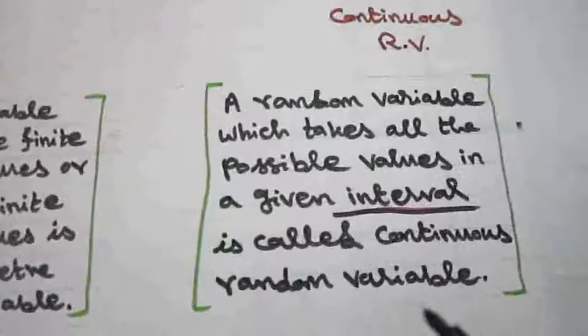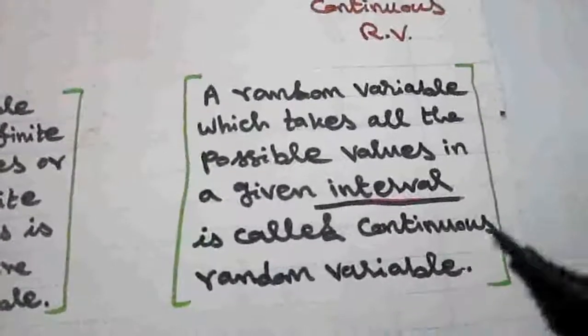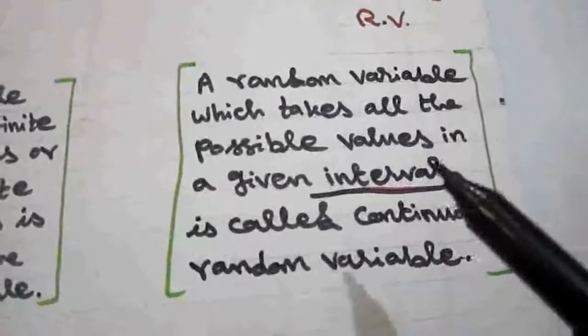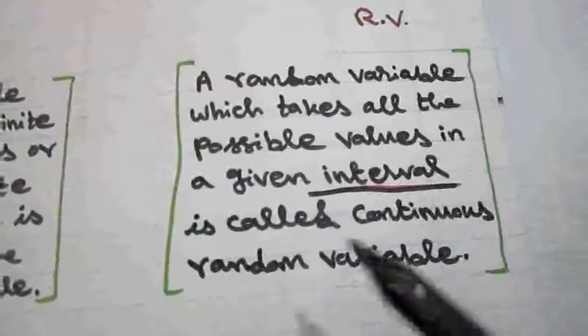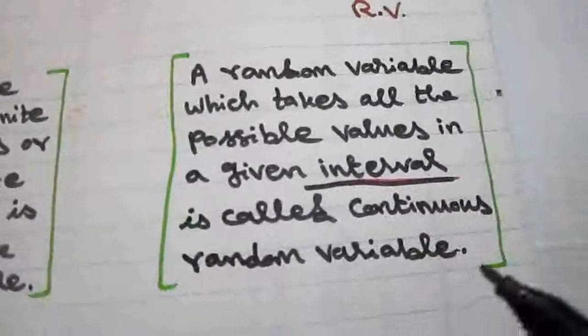Continuous random variable means a random variable which takes all the possible values in a given interval, and is called a continuous random variable.